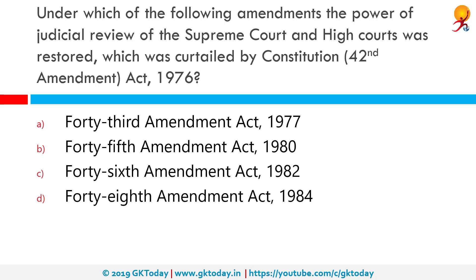Under which of the following amendments was the power of judicial review of the Supreme Court and High Courts restored, which was curtailed by the Constitution 42nd Amendment Act 1976? The correct answer is the 43rd Amendment Act of 1977.